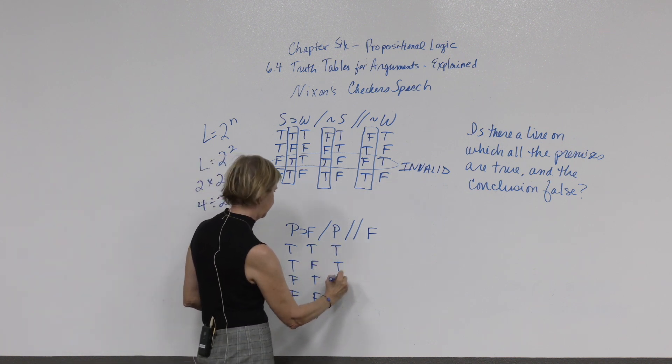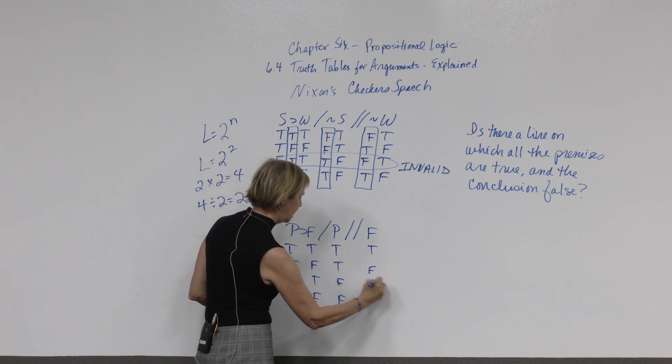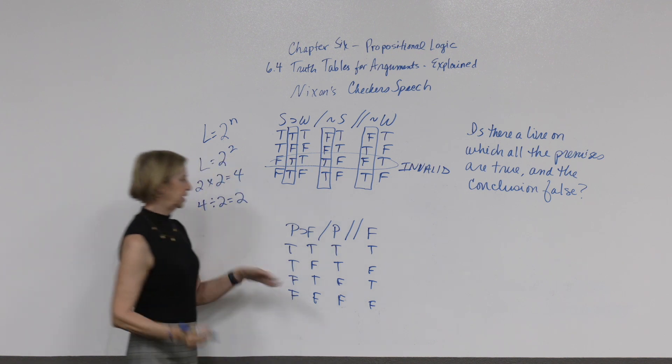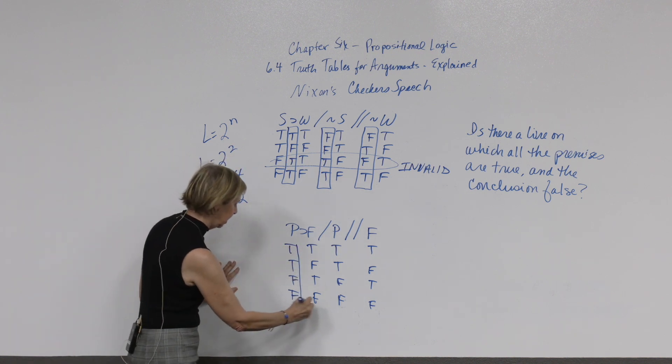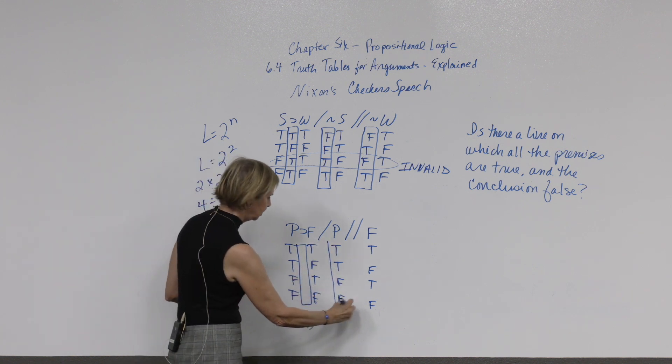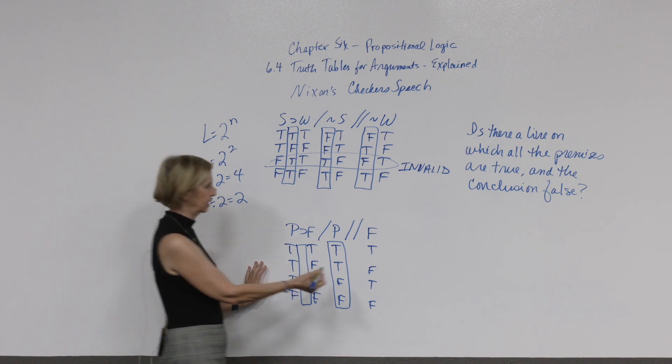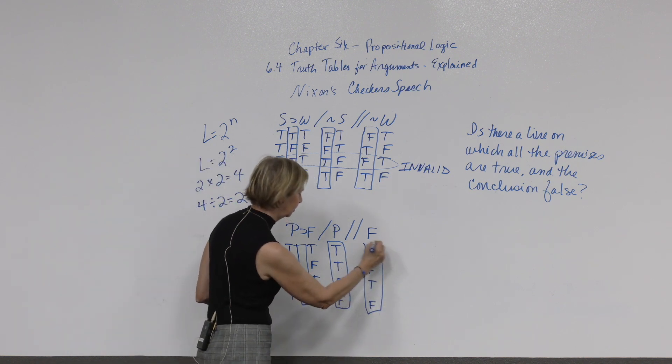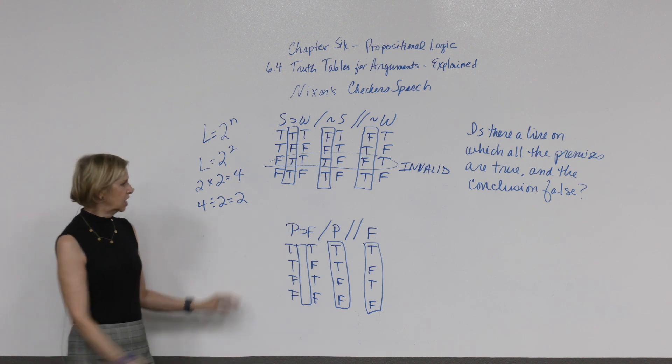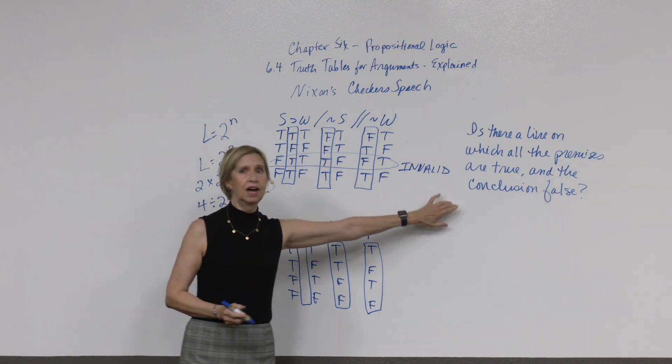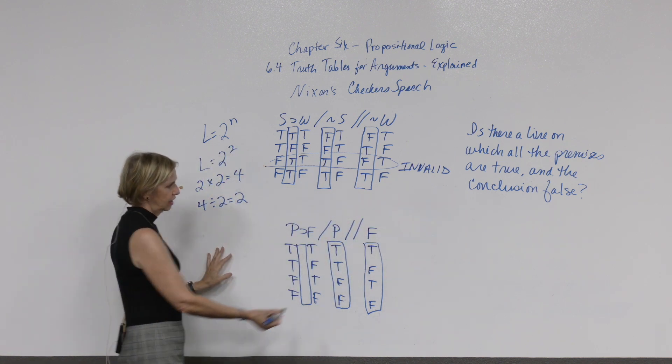That's false. And then true, false, true, false for the second letter. Hopefully, this is getting to be second nature by now. The P would, again, be true, true, false, false. And the F would be true, false, true, false. And then, we have to identify the main operator for each premise and the conclusion. Main operator for this premise would be here. This premise doesn't have a logical operator, it's just the truth value of the statement. And the same with the conclusion. No logical operations, just the truth value of that statement. So, what do you look for? Is there a line in which all the premises are true while the conclusion's false?